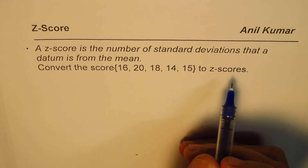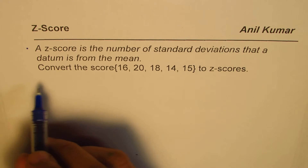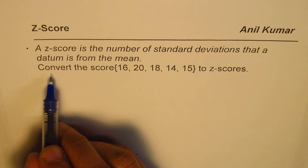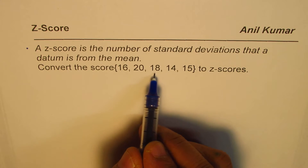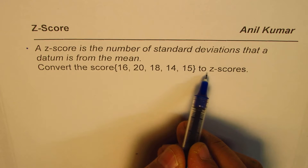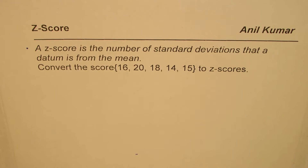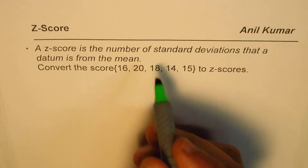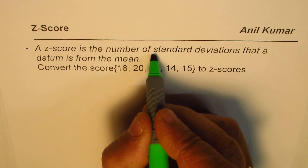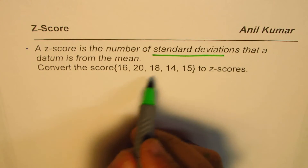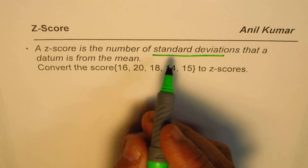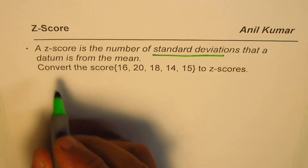We'll take up an example here. The question is: convert the scores 16, 20, 18, 14, and 15 to z-scores. Now to find the z-score we need to find the standard deviation first, and then we can convert each score into the z-score.